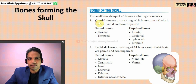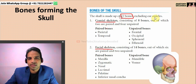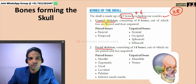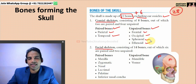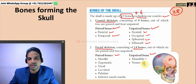The skull has 22 bones excluding the ear ossicles. If ear ossicles are included it becomes 28 — three ear ossicles on each side adding six more bones. The cranial skeleton includes paired bones — parietal bone and temporal bone — and unpaired bones — frontal bone, occipital bone, sphenoid bone, and ethmoid bone. The facial skeleton has a total of 14 bones. The unpaired ones are the mandible and the vomer.